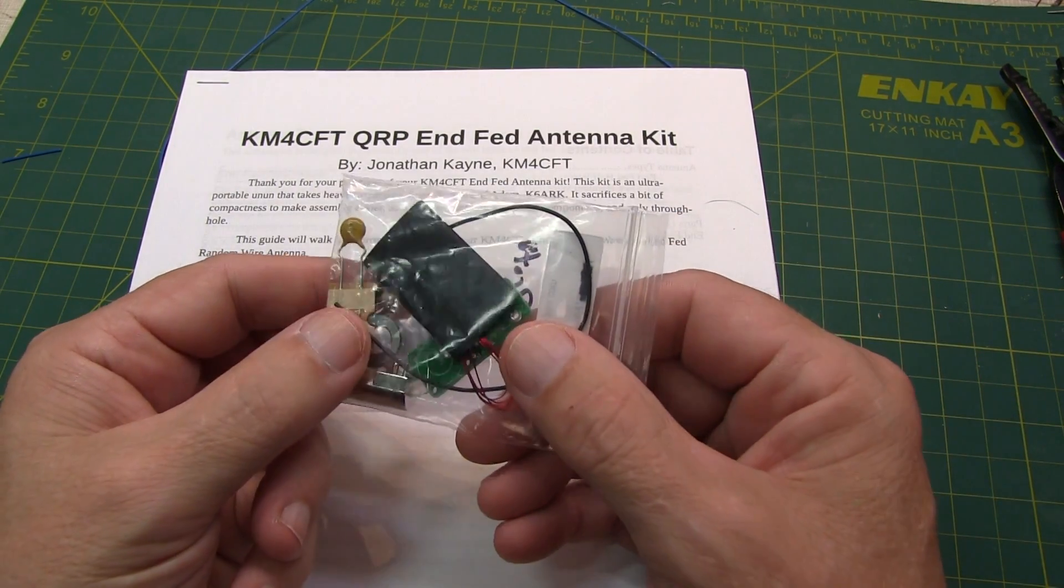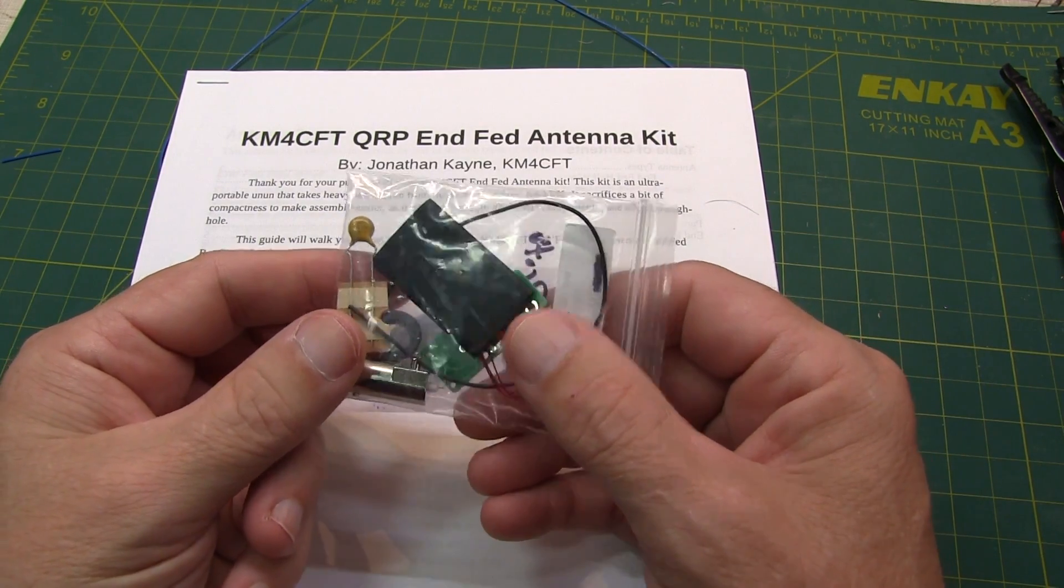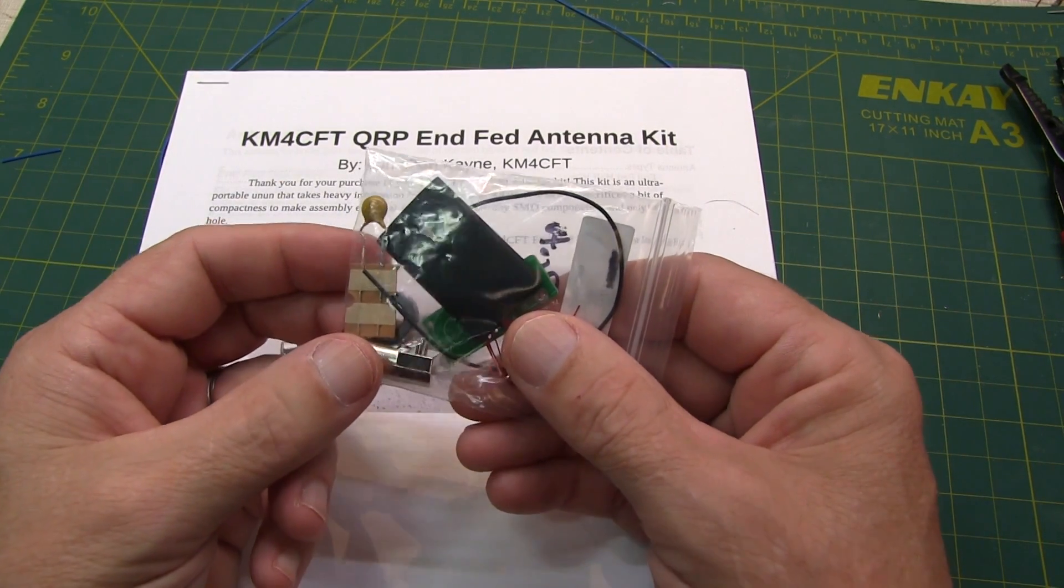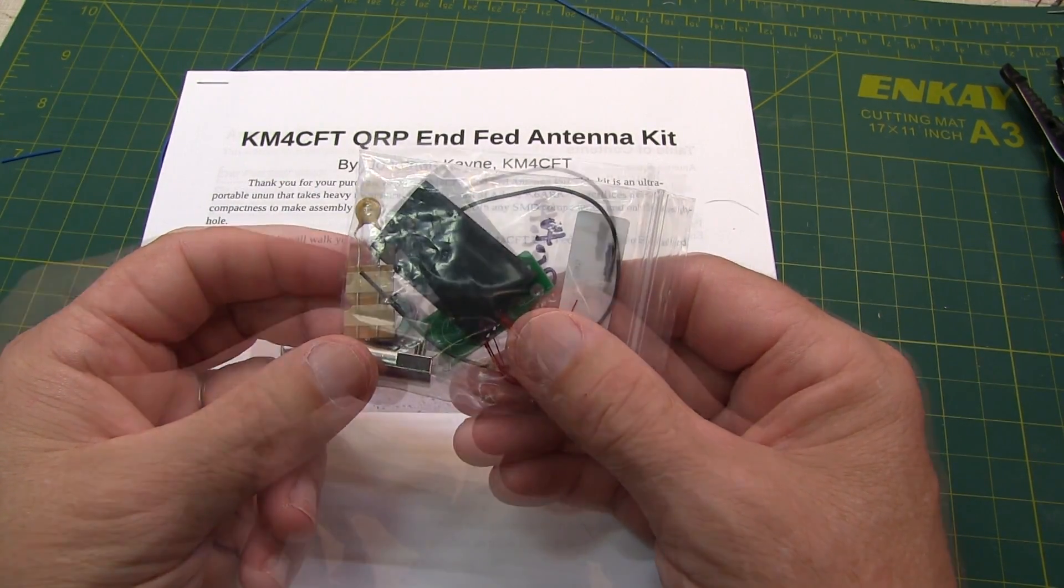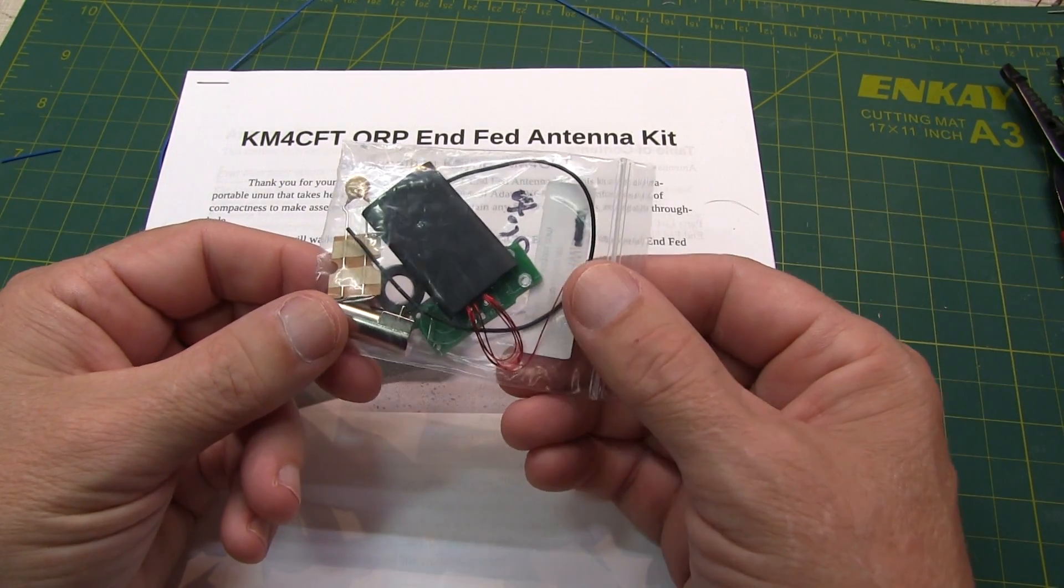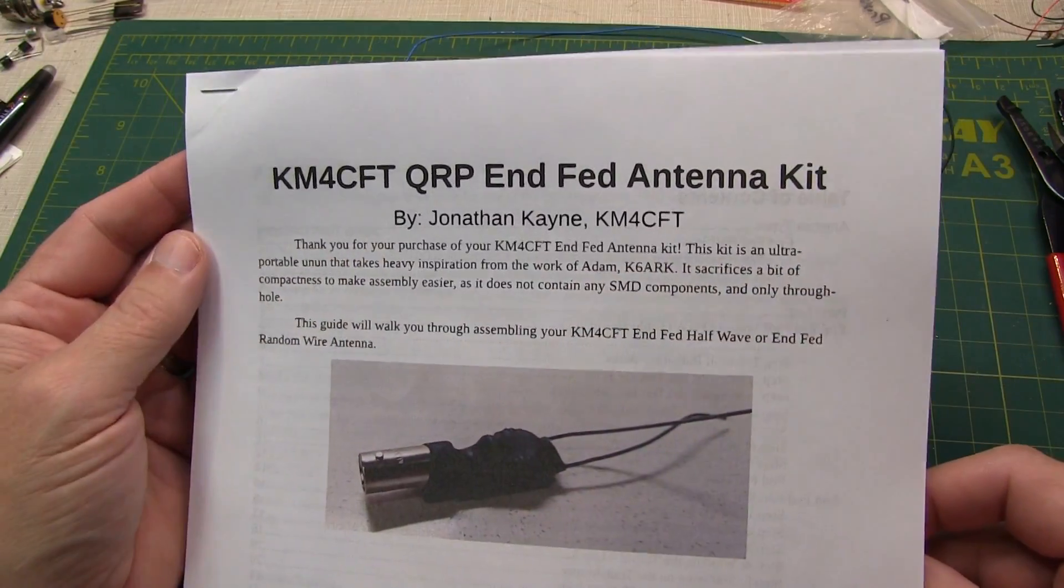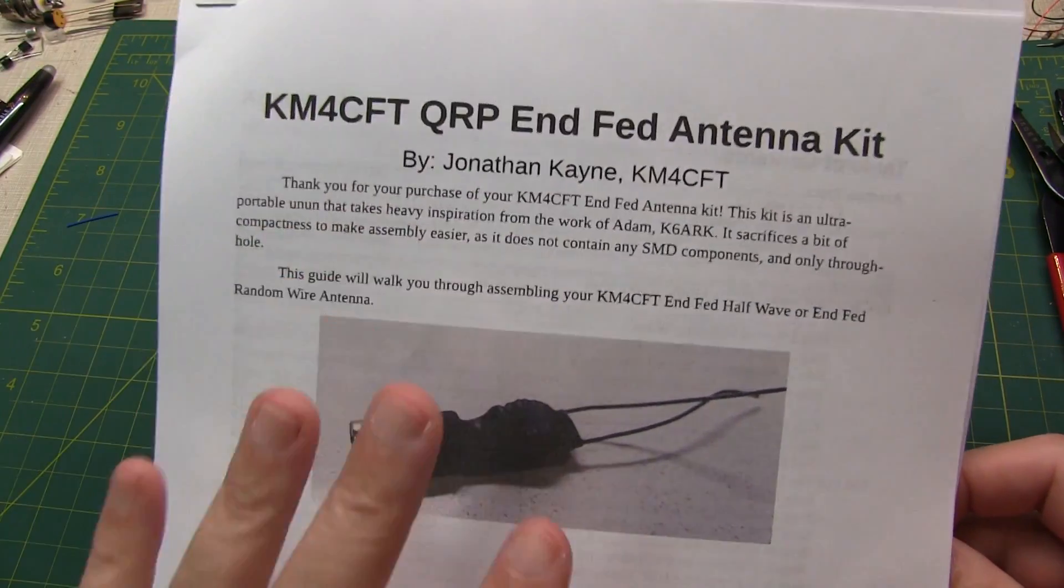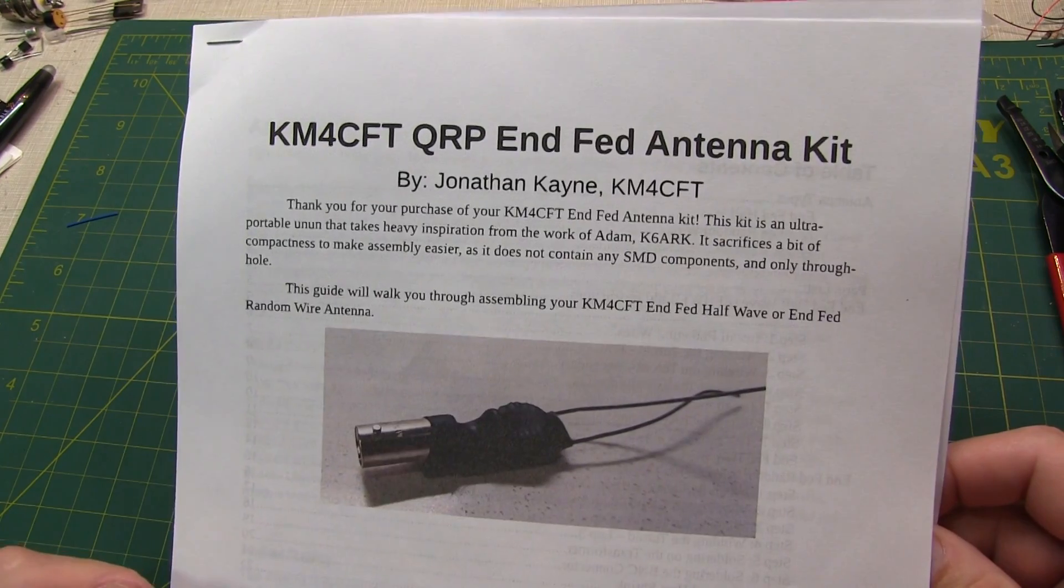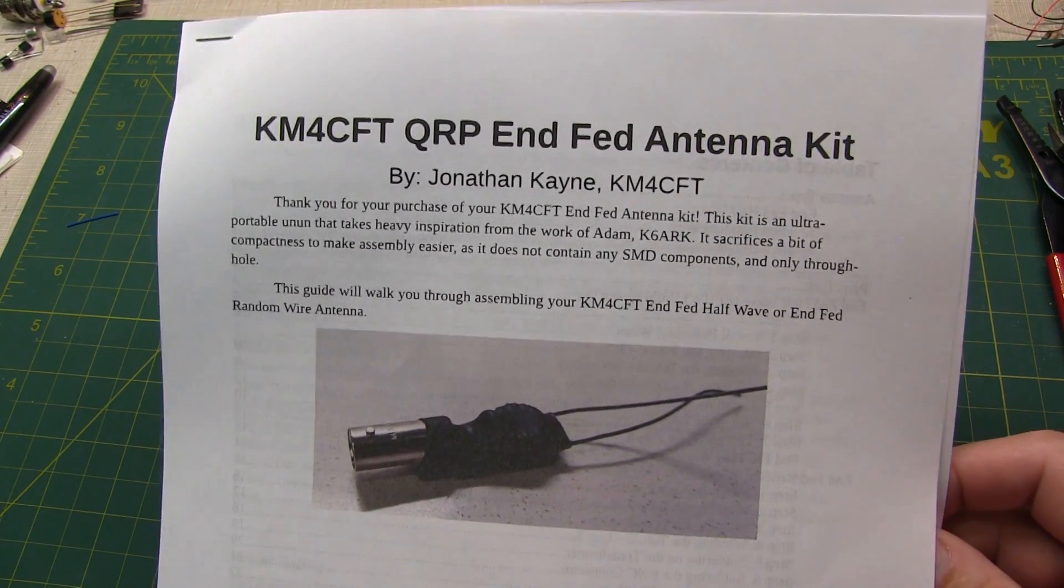The kit can be configured or built either way as a 9 to 1 or 49 to 1 transformer. I'm going to build it today as a 49 to 1 transformer for use with an NFED half-wave antenna. I'll put a link in the video description where you can find the instruction sheet as well as where you can purchase the kit yourself.